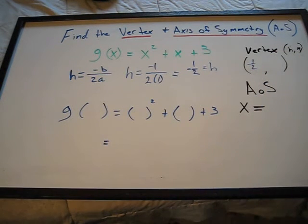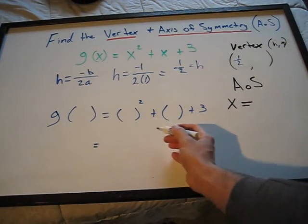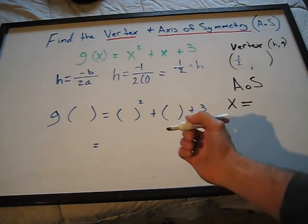Now, to find k, we're going to have to plug in negative 1 half as our x. So we'll do that now.